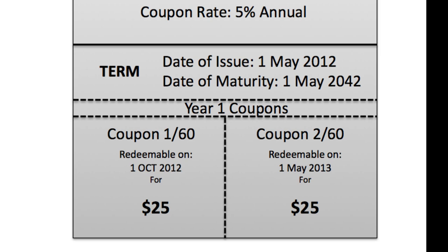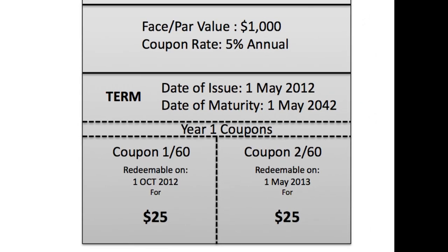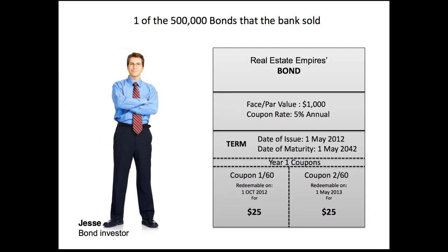Each time you see a coupon date — the next one is 1 May 2013 — Jesse would mail that in and get another $25 check. He would continue doing this for 60 coupons total, paid two times a year. Adding the two coupons for the first year gives $50, and $50 from the $1,000 par value is 5%. That's how you get the coupon rate of 5%. If Jesse holds the bond until maturity, he gets a $25 check every six months and his $1,000 back at the end.